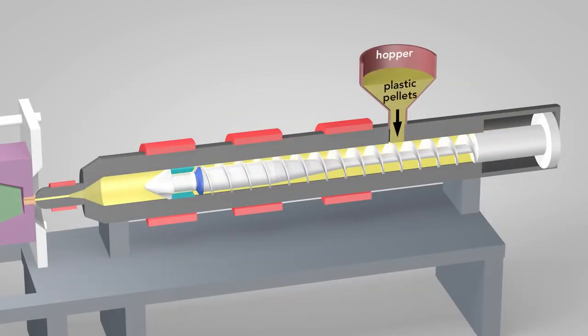Plastic pellets in the hopper feed into the barrel of the injection unit. Inside the barrel, a screw transports the pellets forward.